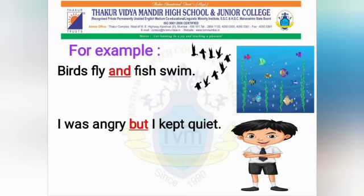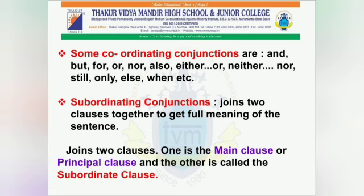So we can see that 'and' and 'but' are coordinating conjunctions. Some coordinating conjunctions are: and, but, for, or, nor, also, either...or, neither...nor, still, only, else, when, etc.